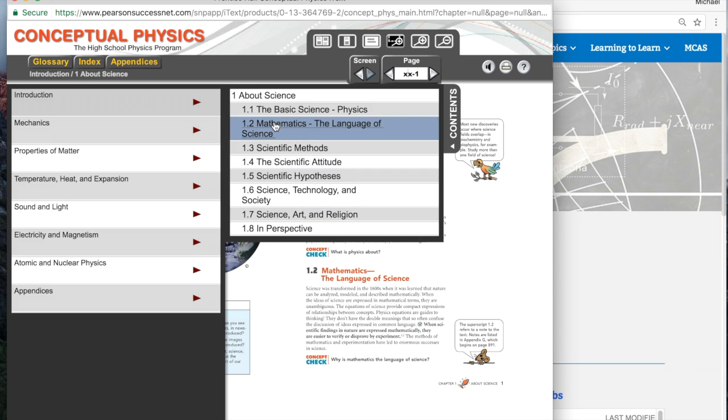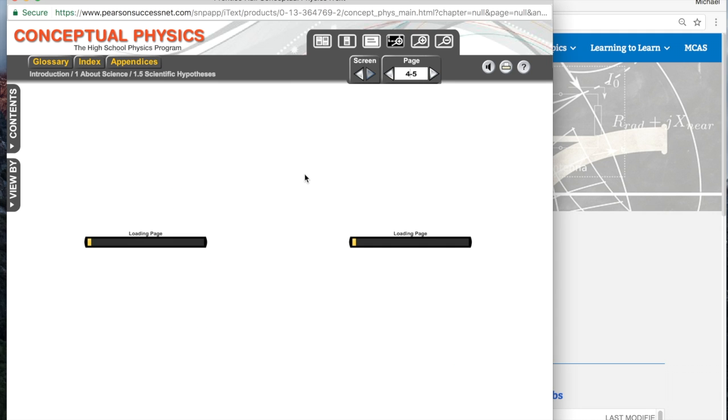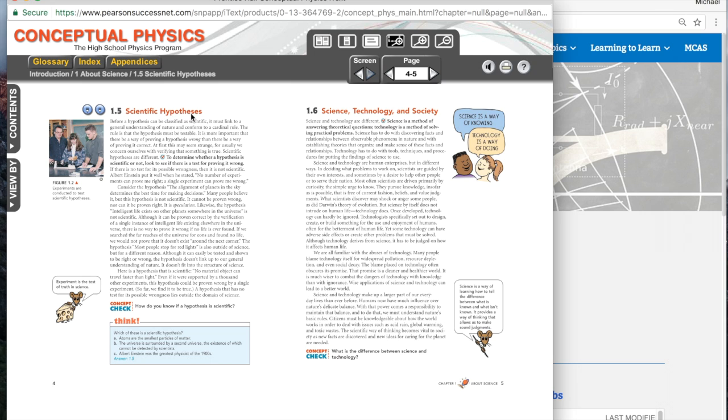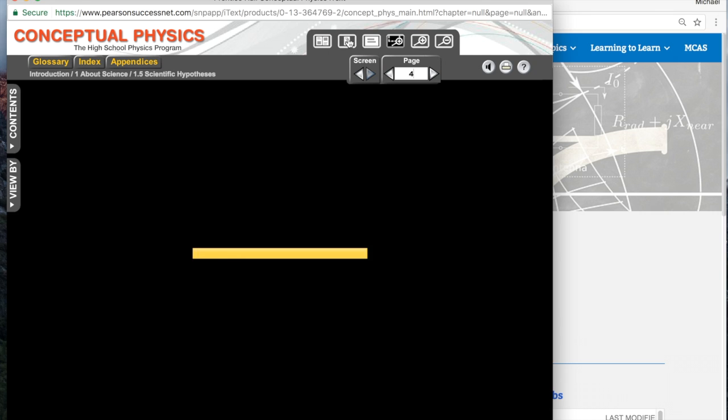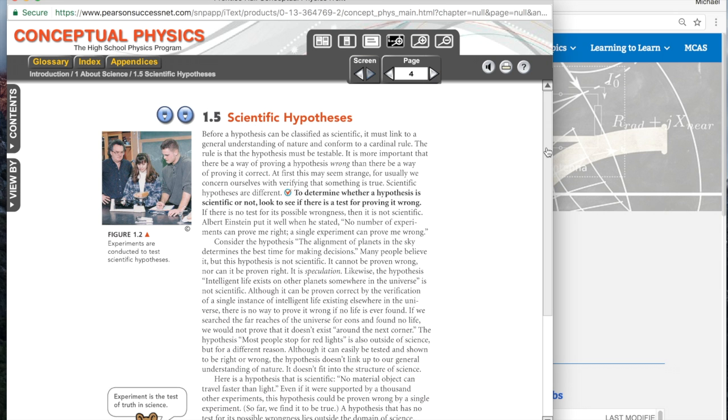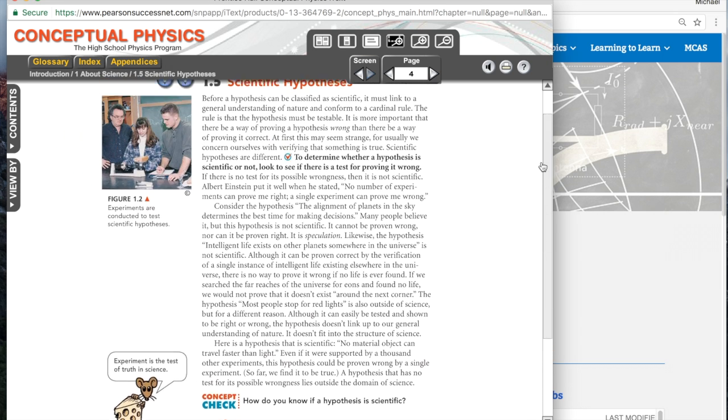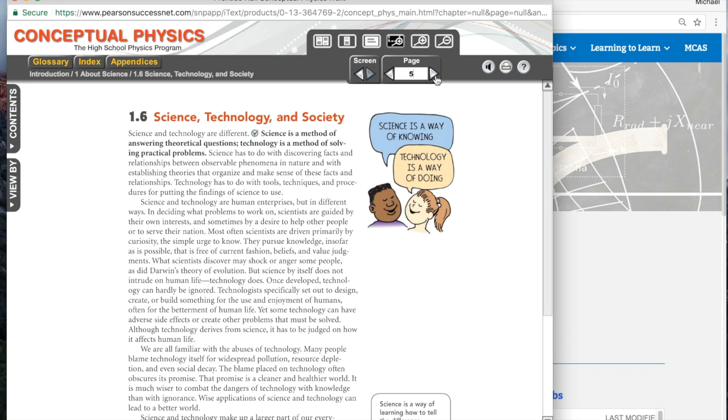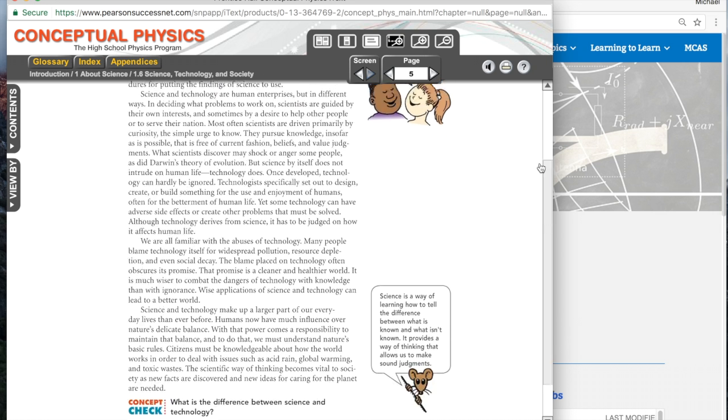Or we go back to introduction, we can go to each of the sections. Maybe we want to find out about hypotheses, click on that and here we go scientific hypotheses. Again if this is too small you can always go to a single page view and then you can grab the bar to scroll up and down so that you can read it and then go to the next page.